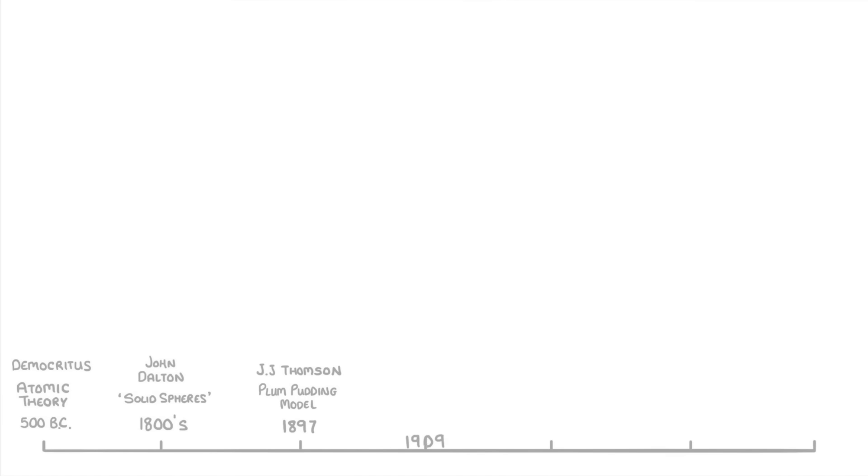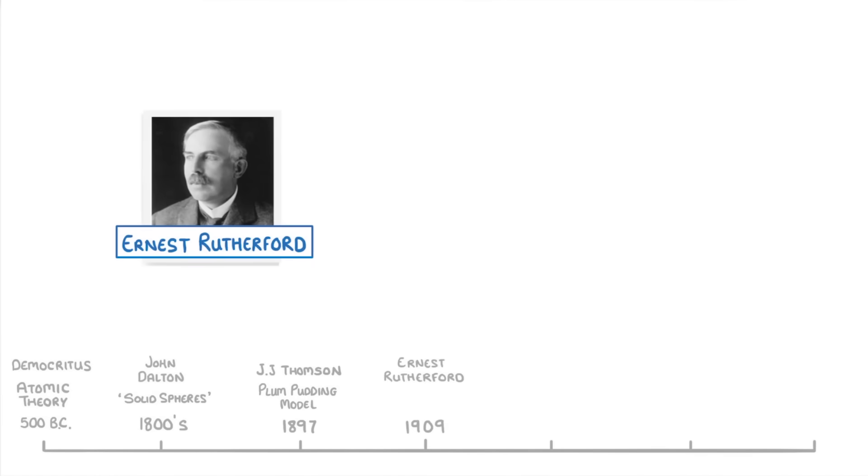Just a few years later, in 1909, a man called Ernest Rutherford and his students made another big discovery. What they did in their experiments is they took positively charged alpha particles and they fired them at a really thin sheet of gold.